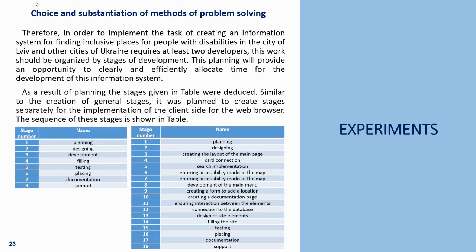Experiments. Choice and substantiation of methods of problem solving. In order to implement the task of creating an information system for finding inclusive places for people with disabilities in the city of Lviv and other cities of Ukraine, at least two developers are required. This work should be organized by stages of development, providing an opportunity to clearly and efficiently allocate time. Stages were also planned separately for the implementation of the client side of the web browser.